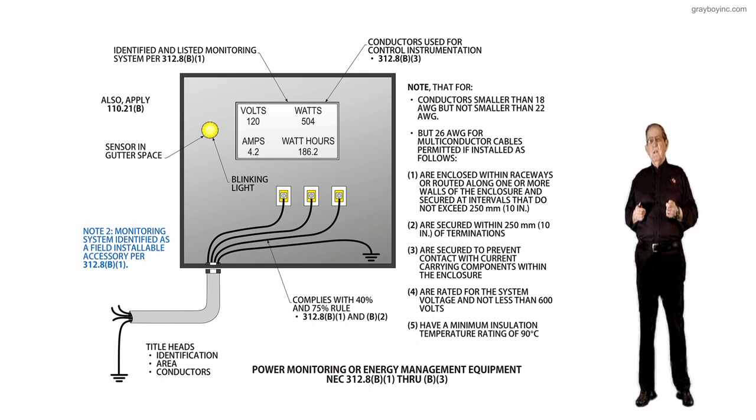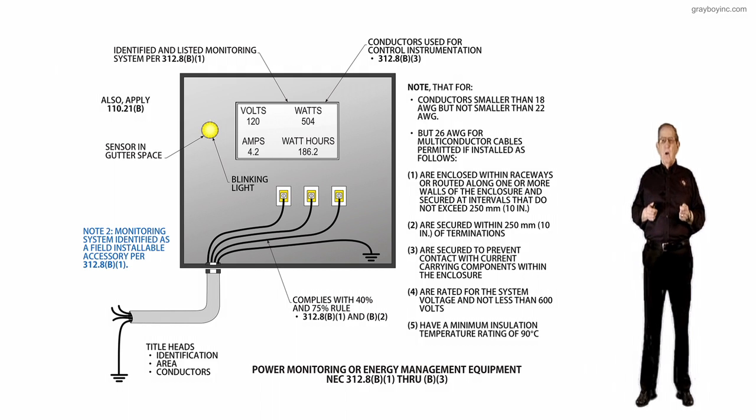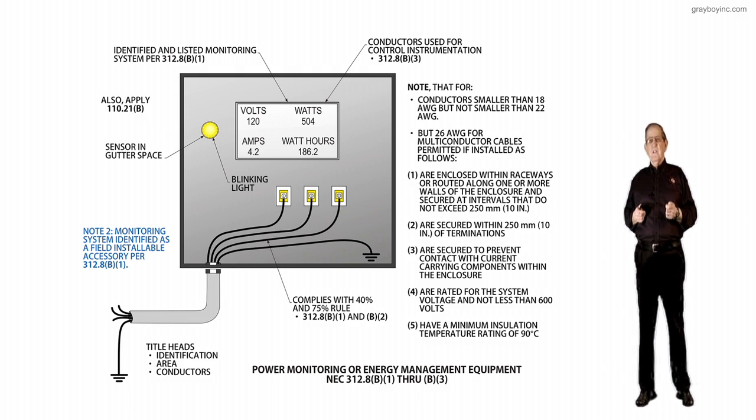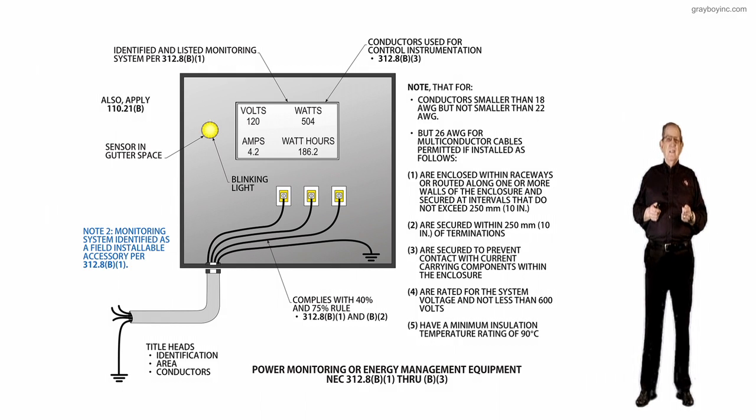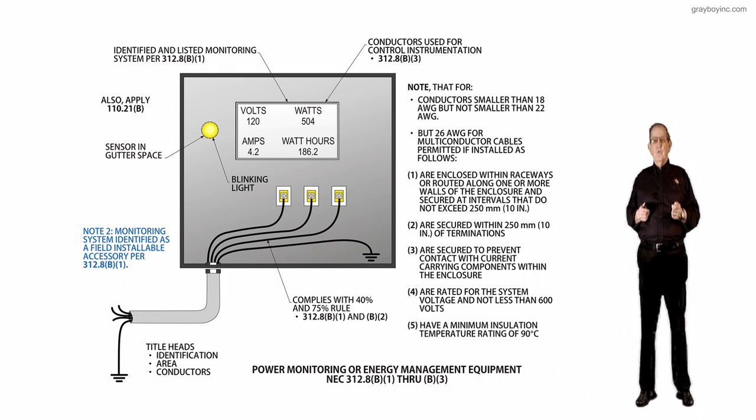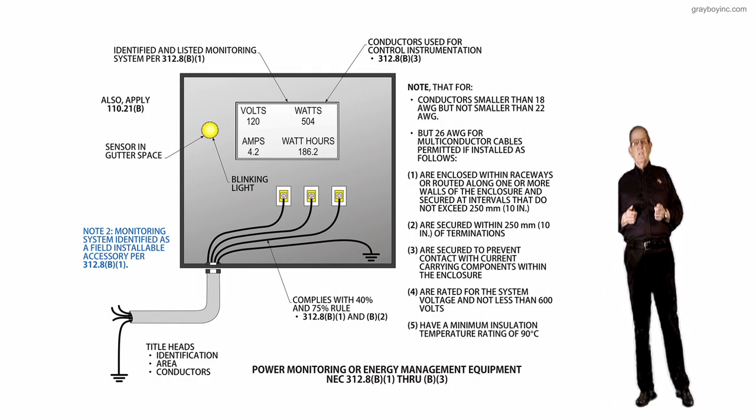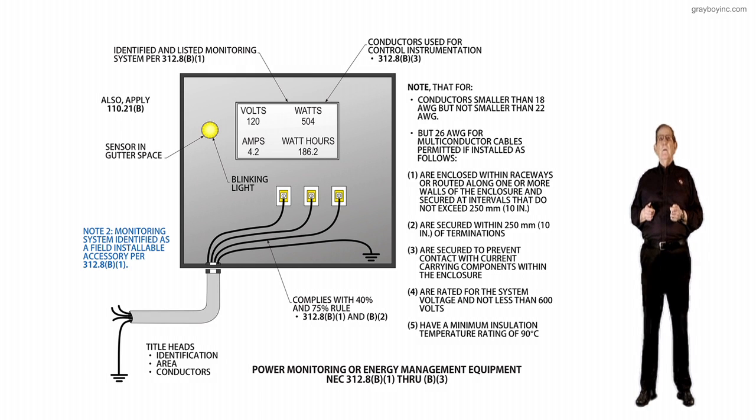The second option establishes use of smaller AWG conductors along with specific construction and insulation requirements to address the usability of these smaller conductors in the wiring space environment so that there's not a greater chance of damaging these conductors and their insulation.